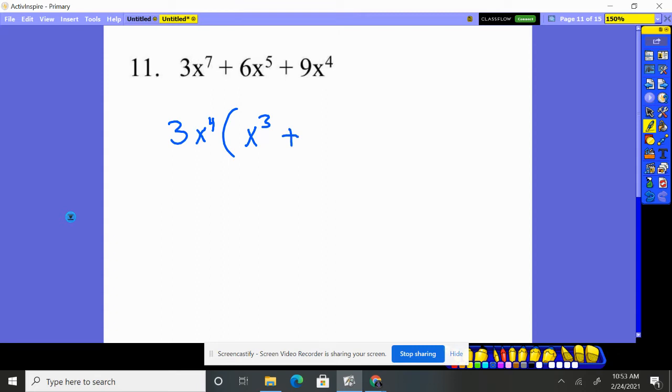Next, we had a six X to the fifth. We factored out a three X to the fourth. So a two is going to be there because three times two will give us back the six. And then X to the fourth times an X will give us back our X to the fifth.